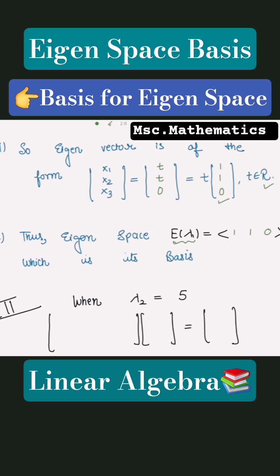Next, let's work on the eigenvalue lambda 2 equal to 5. So for that, we must write the homogeneous equations of this format. This is your lambda 2 i minus a, and this is your x, and this is 0.